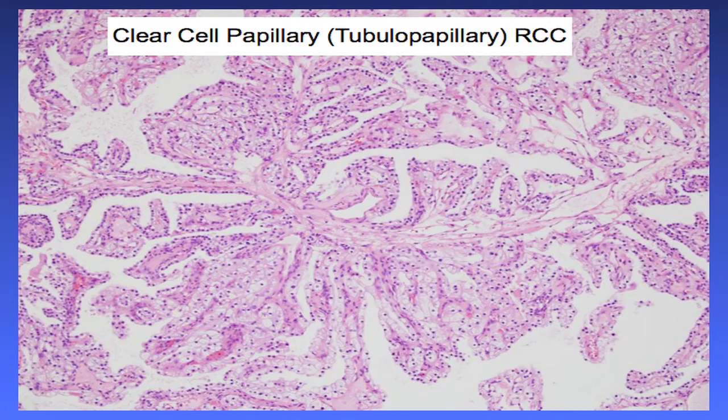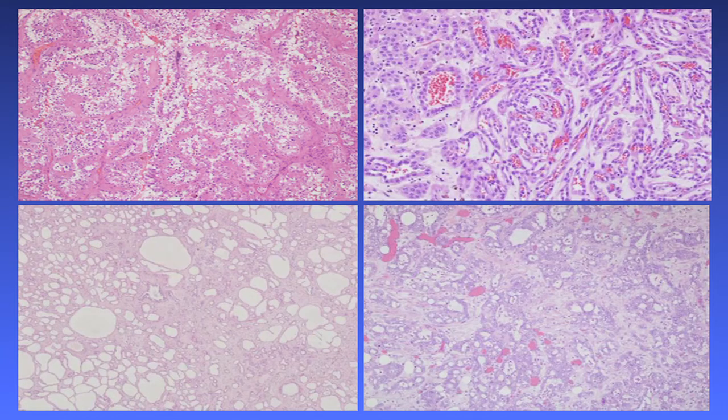There are some new subtypes you'll see in surgical pathology reports. One is clear cell papillary, or clear cell tubulopapillary — not a very good name, as it's confusing. It is a distinct entity, different from clear cell and different from papillary. It tends to be low grade, not very aggressive. Most patients are cured. There's a single report of a metastatic lesion. This will probably become the third most common subtype in renal cell carcinoma.